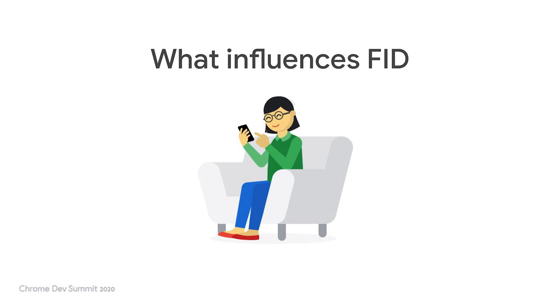It's important to remember that first input delay is a field metric and it requires a real user. It's not easy to guess what a user might do — some users are interested in X, others might scroll first before tapping on something else, and others are more impatient and tap things immediately. This is all impacted by what you show the user — a splash screen or a loading carousel — and what other work you might be doing underneath the UI. The variation in input delays shows the importance of collecting and analyzing FID data from your users in the wild, focusing on high percentiles like the 75th.